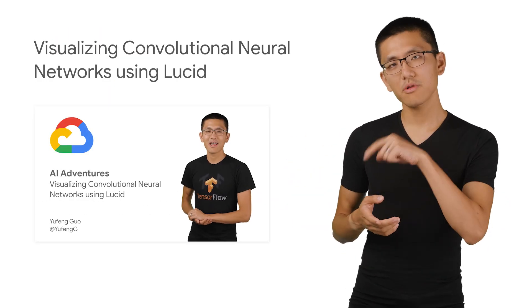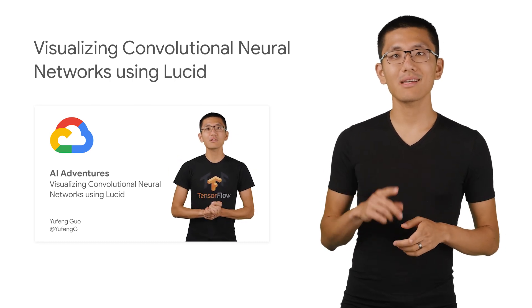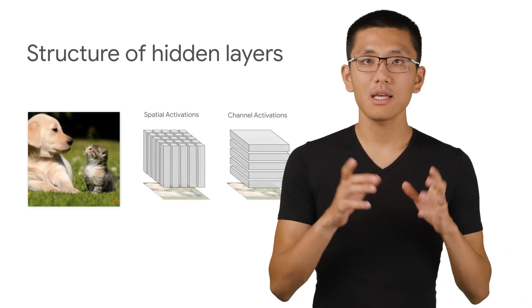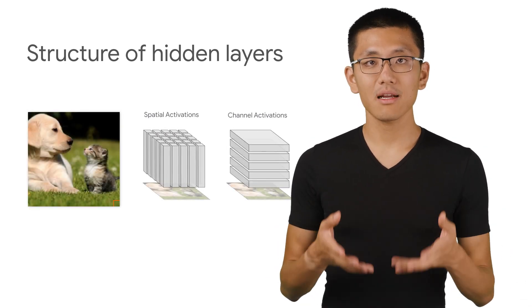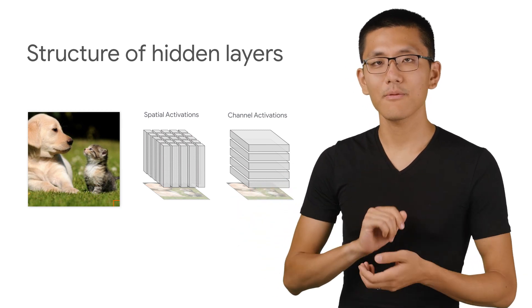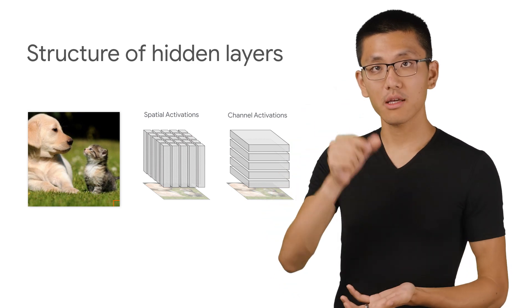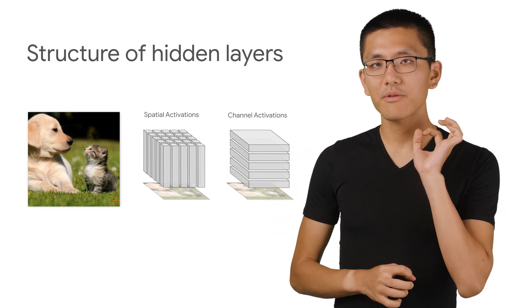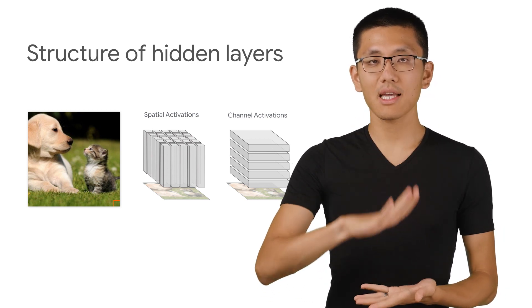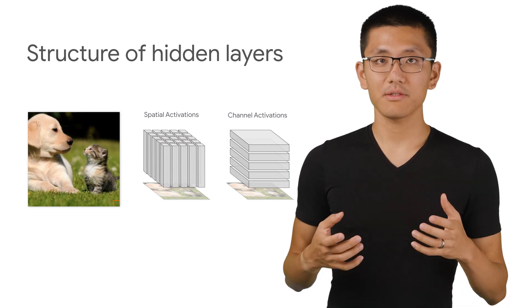This video picks up where the previous video left off. So if you haven't watched that, you should definitely check it out first. Now previously, we looked at how the neurons in a convolutional neural networks layers can be organized into channels and then stacked like a layer cake. We can also organize it in our mind vertically so that we are looking at a certain patch of that layer and consider the activation of all neurons stacked together over a region. We call this spatial activations.